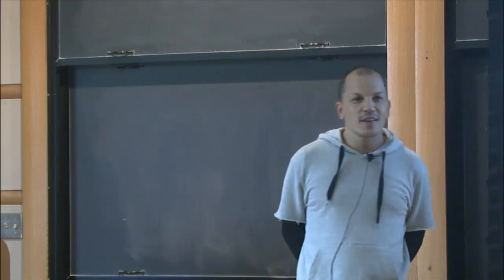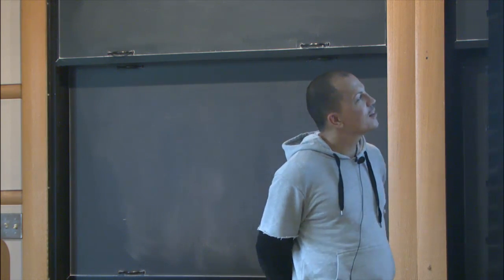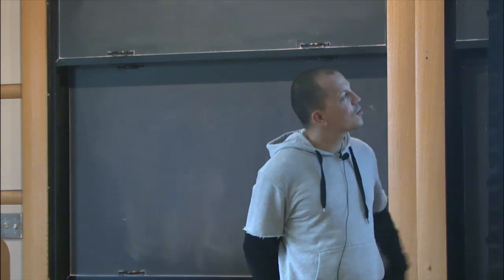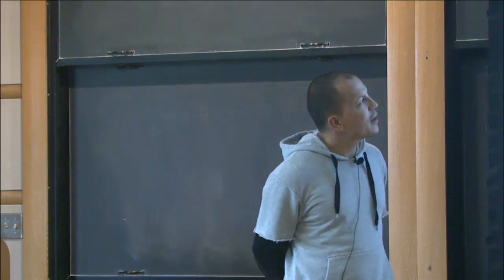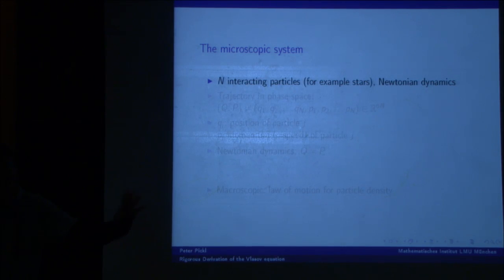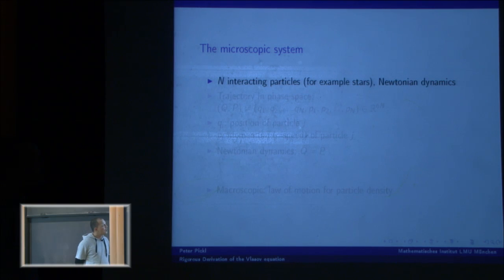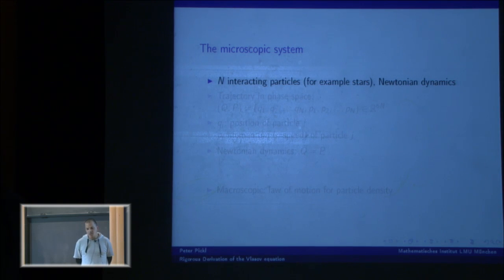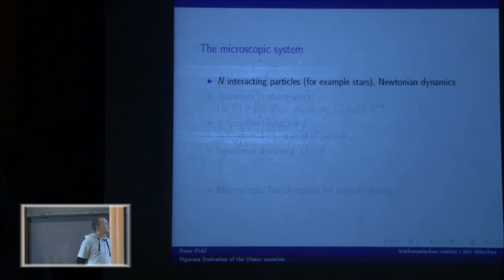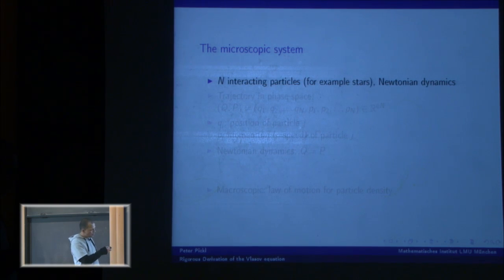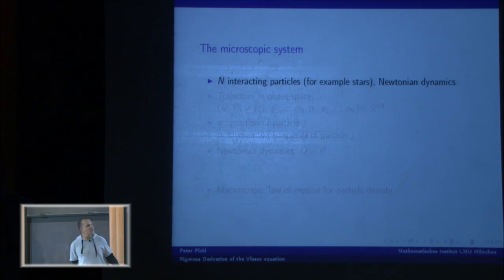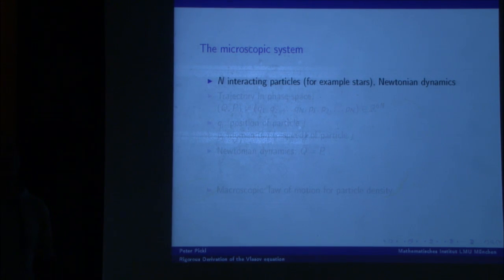Since there are mathematical physicists here, please excuse if the beginning is a little slow, but I think it's good to get the picture first. What I would like to do initially is some heuristics, and later the rigorous part. I'm interested in the derivation of effective equations for microscopic dynamics — specifically, a very natural system we all know from high school: a system of N interacting particles, which you could think of as stars, subject to Newtonian dynamics.